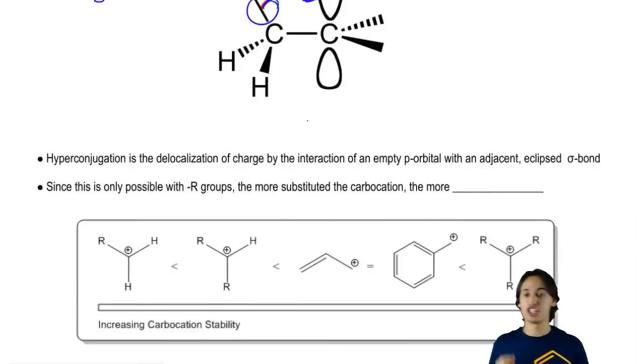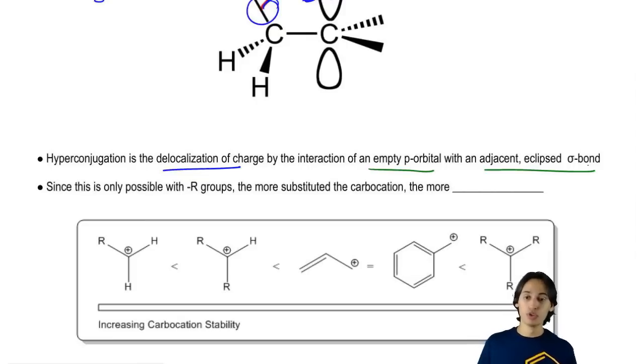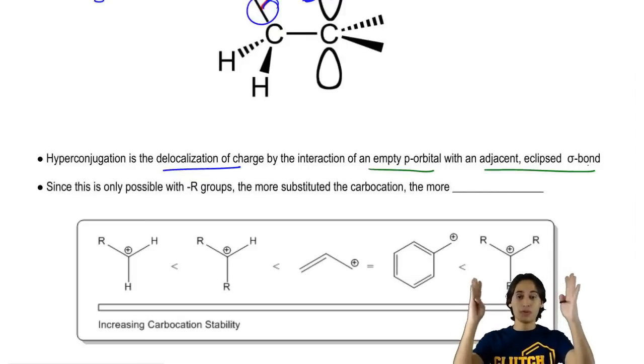So basically hyperconjugation is defined by the delocalization of charge of the interaction of a P orbital, empty P orbital with an adjacent eclipsed sigma bond.